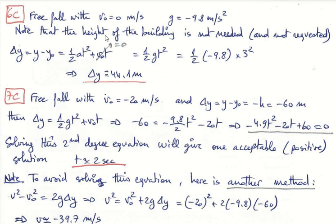Note that the height of the building is not needed and not requested. I heard several questions about the building height, but the building height has no use in this exercise. Only the displacement is required. So delta Y = Y - Y0...